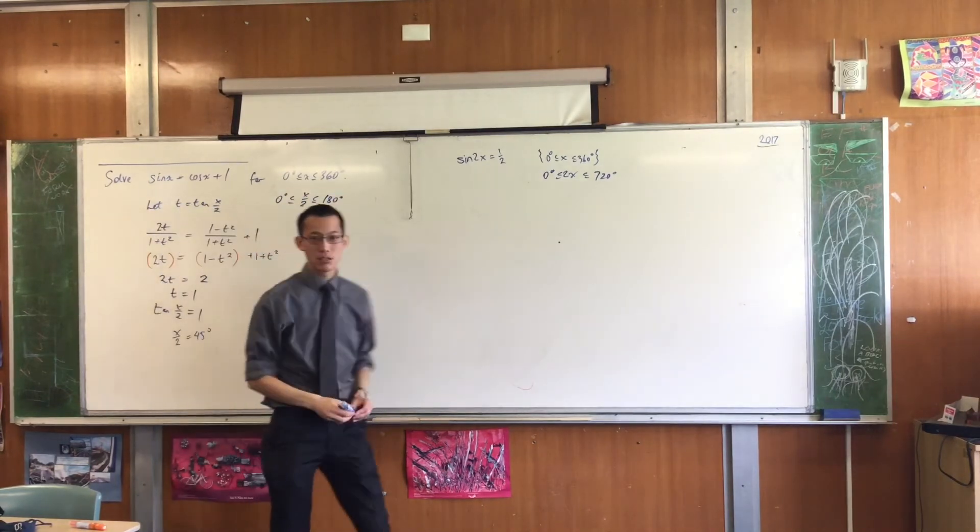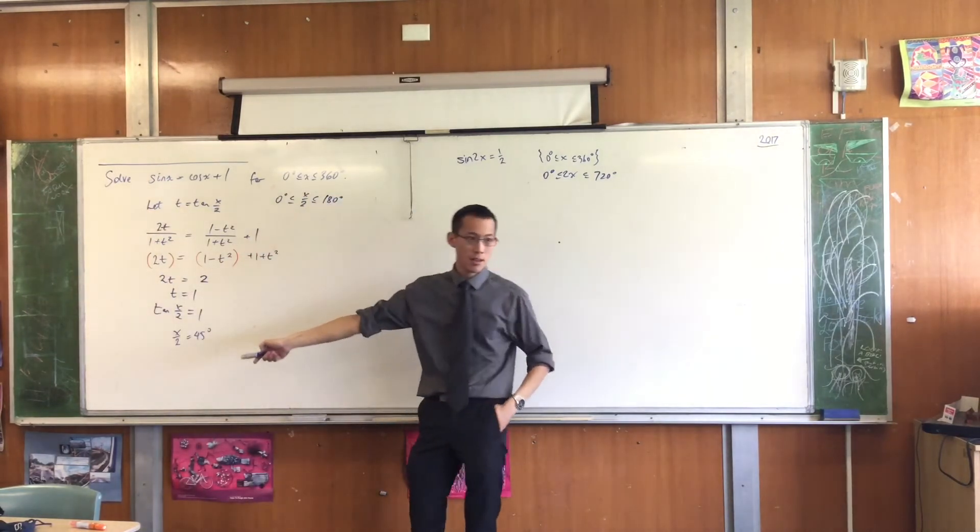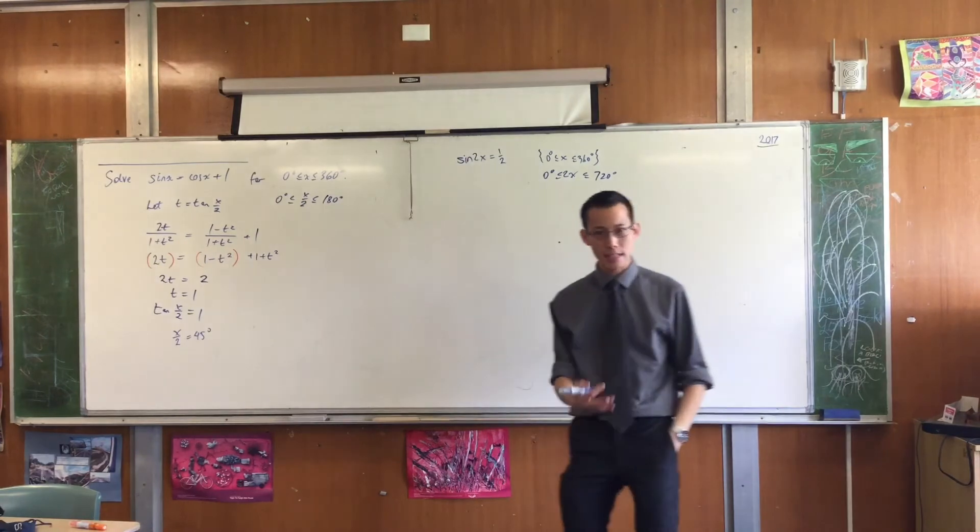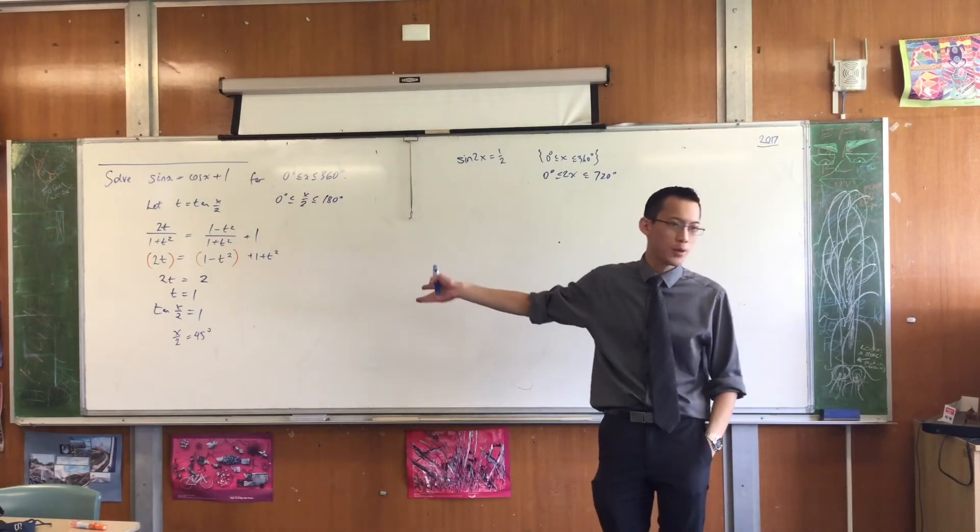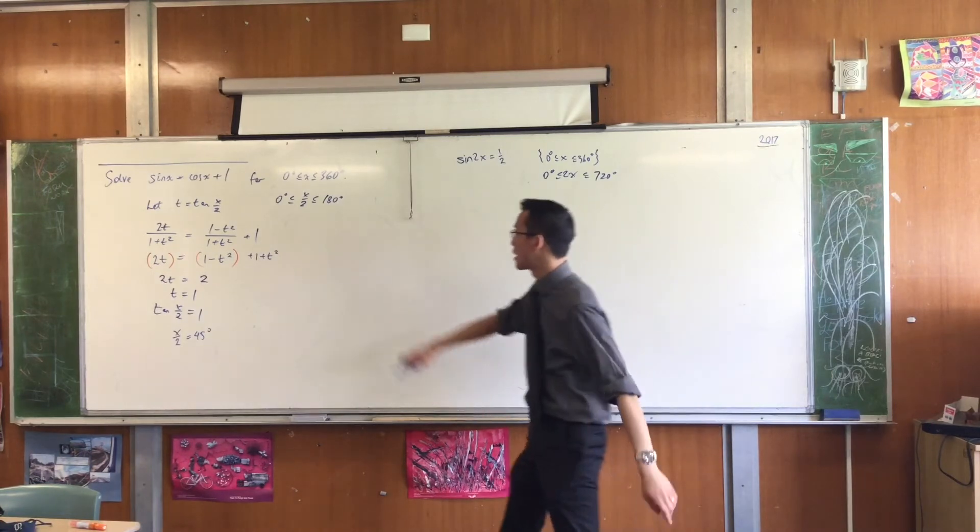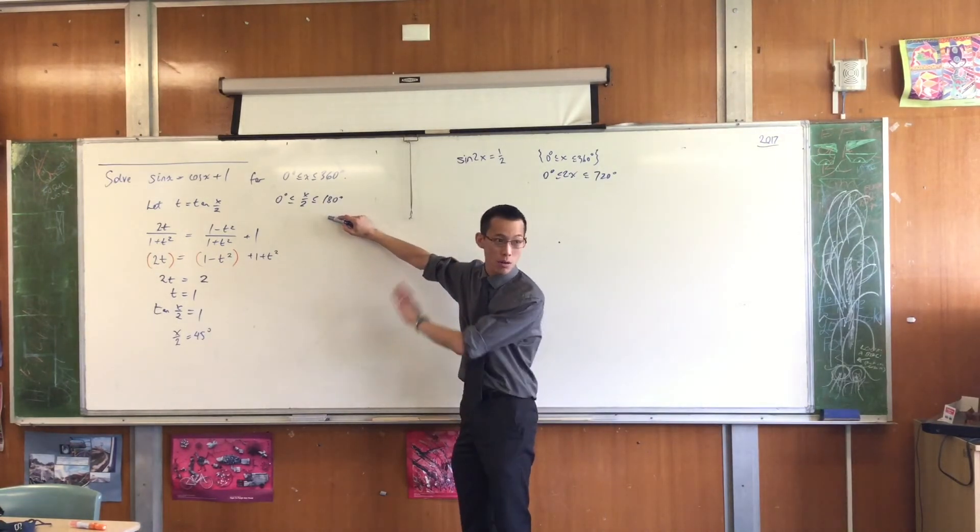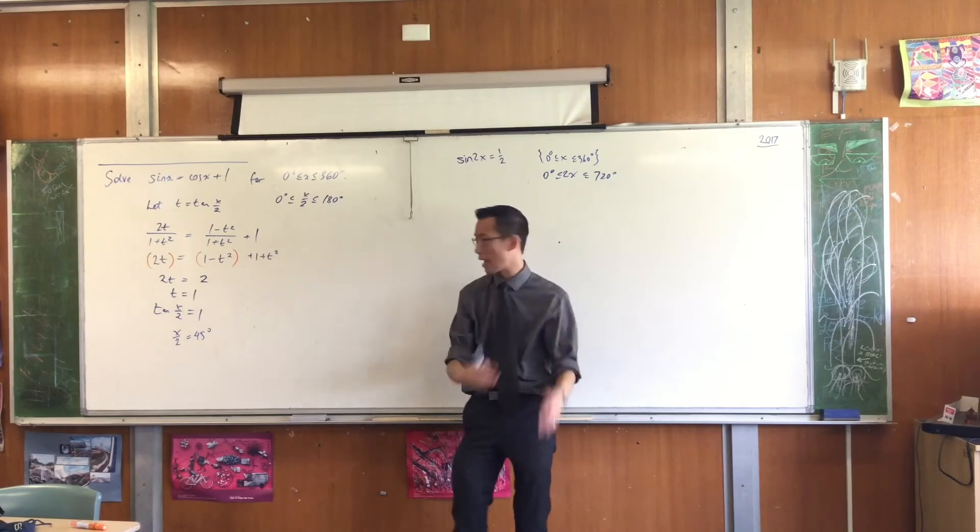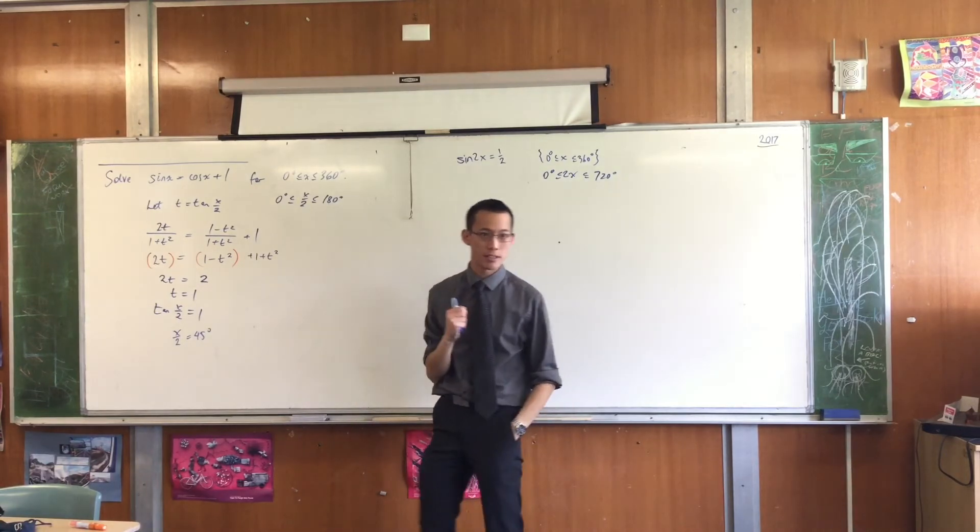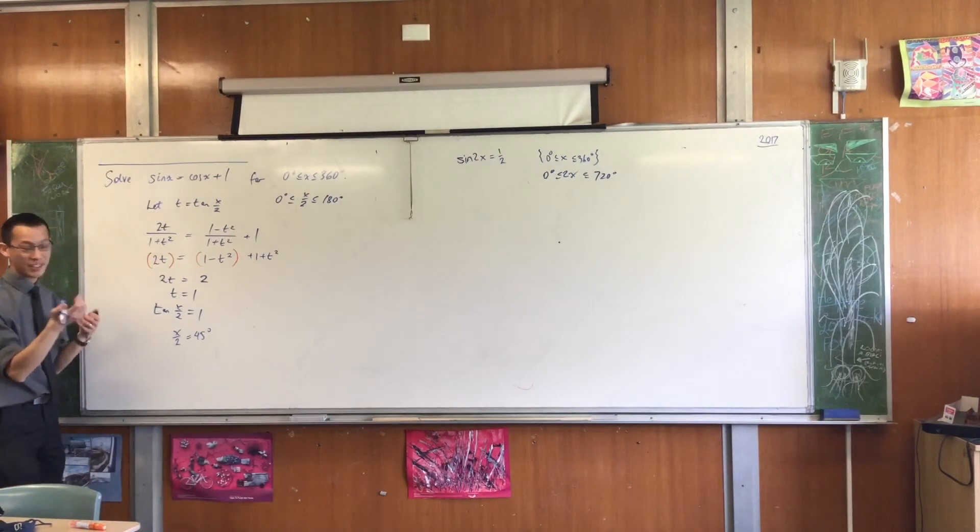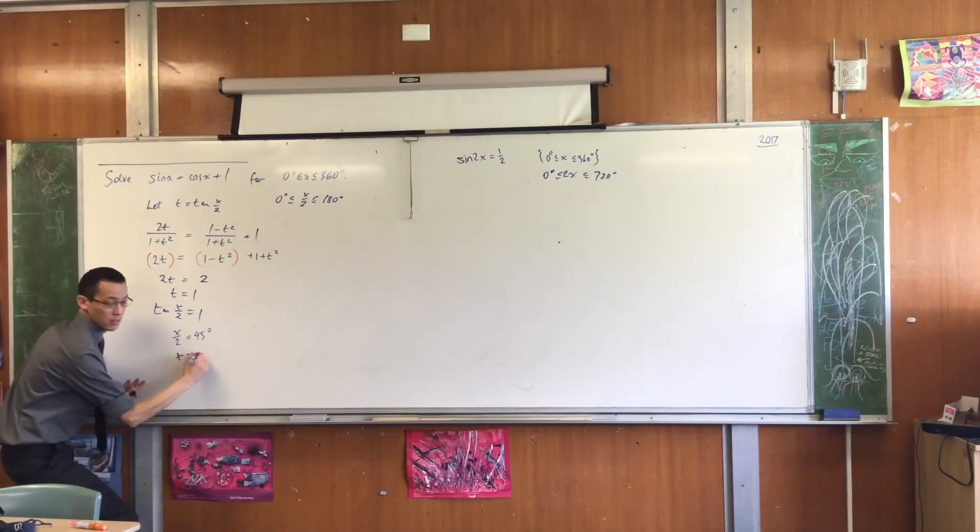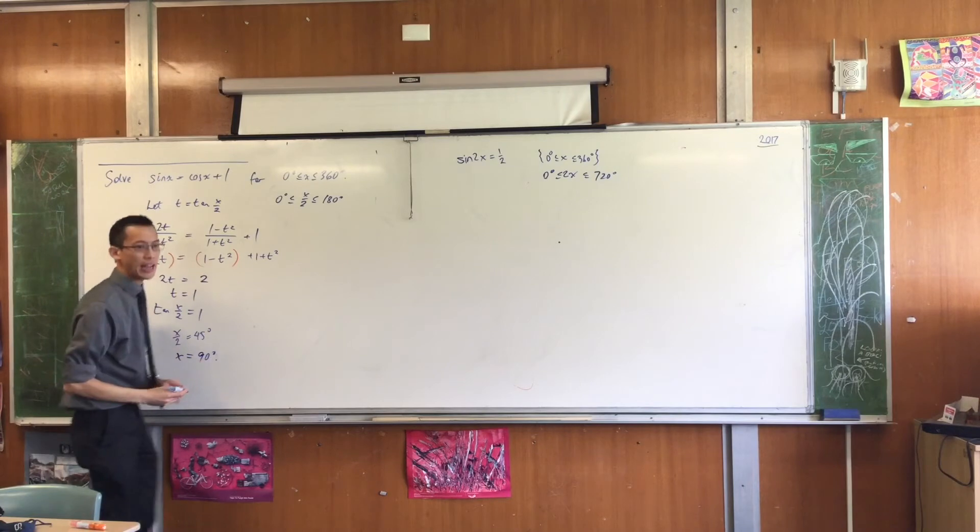Now when you think of what the next solution is going to be, it's going to be 225. Is that in the domain? Answer: No. So you can write if you want or 225 and then exclude it. But if I've written up here and recognized, you know what, this is a very closed domain, this is the only solution that you find. I don't want x on 2, I want x. So I will multiply it through. And I have a solution.